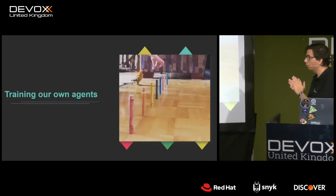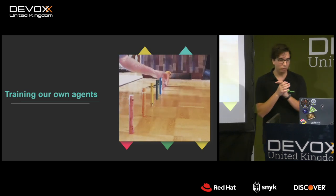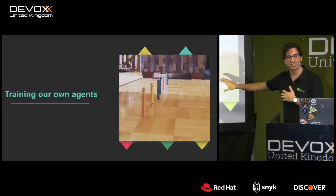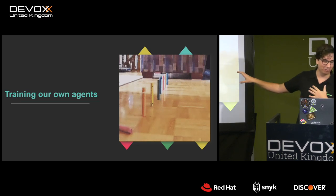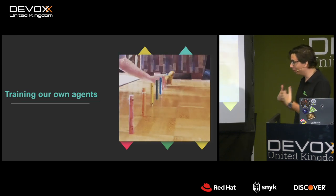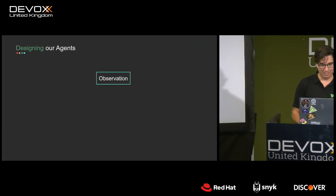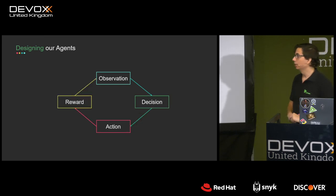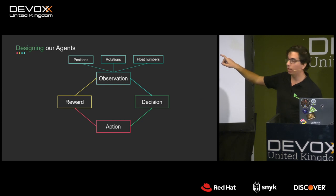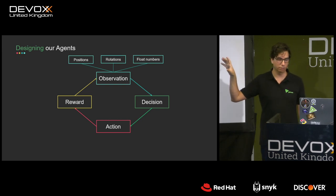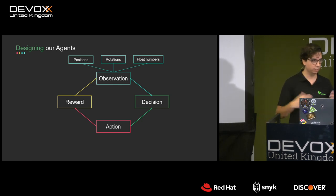So, let's talk about training our own agents. All agents in the 3D world have a loop. First, they make an observation — think positions, rotations, any float or decimal number in your 3D world, like distances or weights. Then, based on the observation, the Python trainer makes a decision. You can set decision periods — for example, every X steps I want to make a decision — and we mostly allow the agent to take actions between decisions.